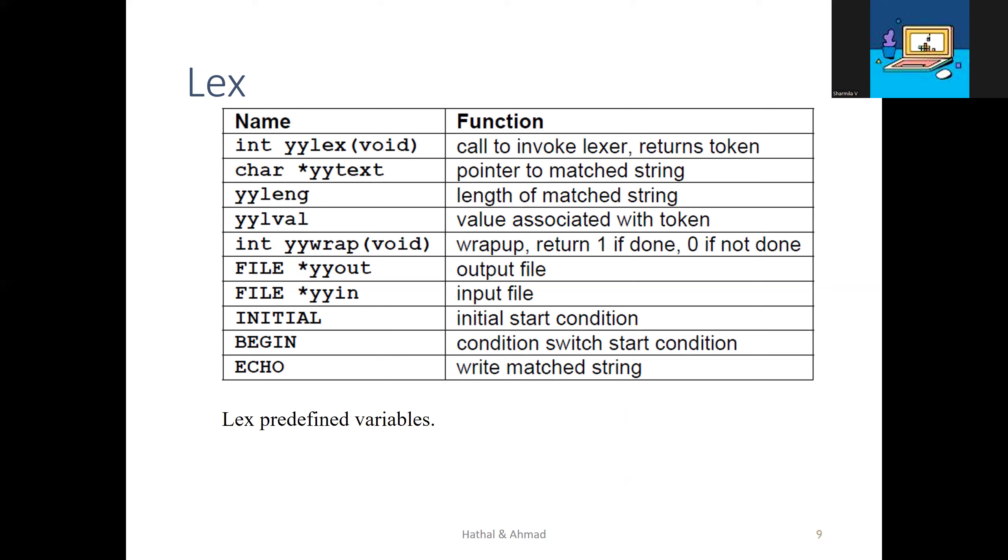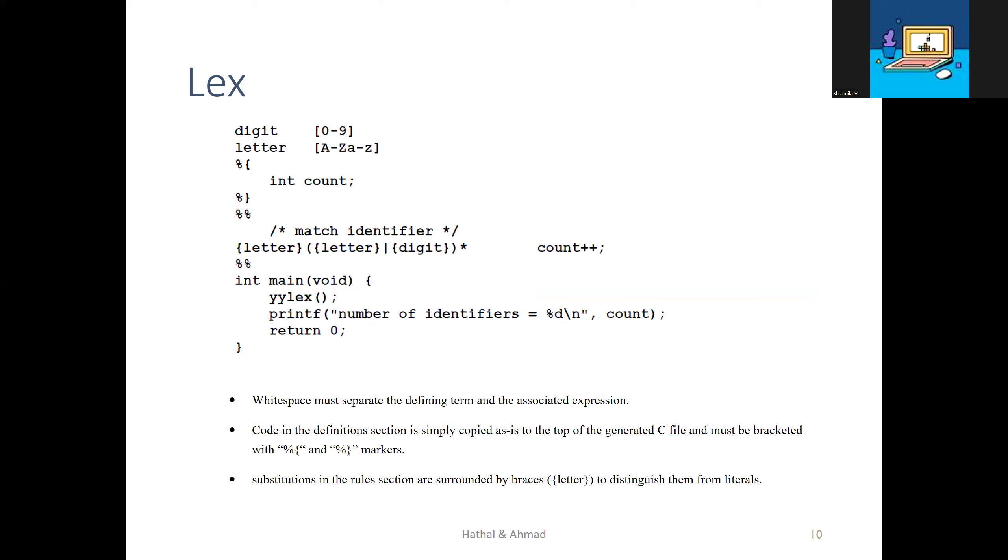Lex predefined variables: yylex(void) calls to invoke the lexer and returns a token, yytext is a pointer to the matched string, yyleng is the length of the matched string, yylval is the value associated with the token, yywrap returns 1 if done or 0 if not done, yyout is the output file, yyin is the input file, INITIAL is the initial start condition, BEGIN is a condition switch for start condition, and ECHO writes the matched string.